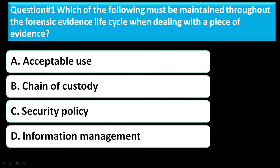Question number one: Which of the following must be maintained throughout the forensic evidence lifecycle when dealing with a piece of evidence? Option A is acceptable use. Option B is chain of custody. Option C is a security policy. Option D is information management.